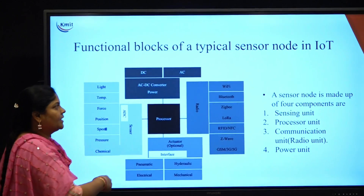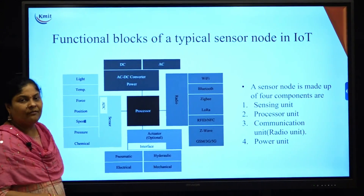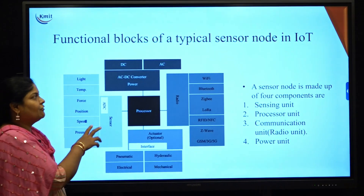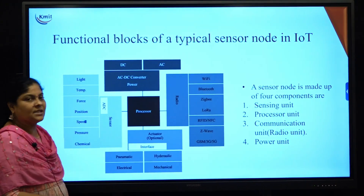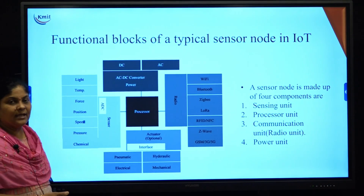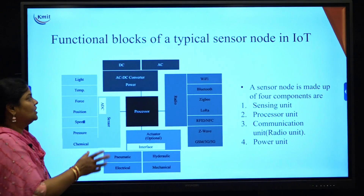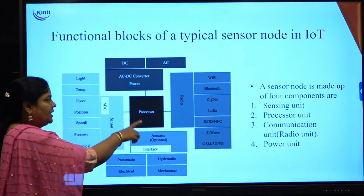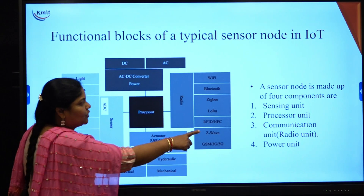This is the block diagram of a sensor node. In wireless sensor networks, there will be multiple sensor nodes. The functionality of sensor nodes is to process the data, compute the data, implement the data, and exchange the data. This block diagram consists of four main components.